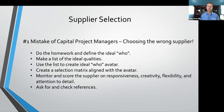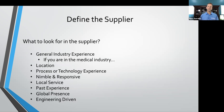You want to monitor and score the supplier on responsiveness, creativity, flexibility, and attention to detail. Then ask for and check references — if you've never used this company before, do your due diligence to make certain they have been successful, ideally in similar types of applications. Throughout this process of capital project mastery, it's about learning to create a vision — a vision for the project overall, a vision for the team members, and a vision for your supplier.